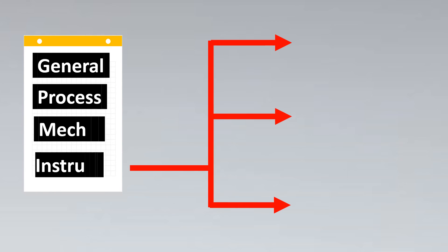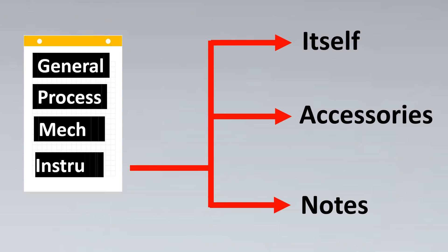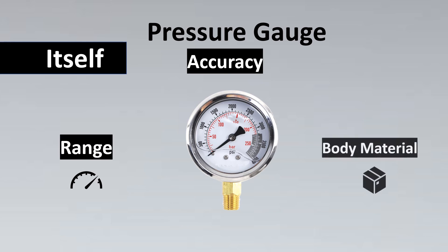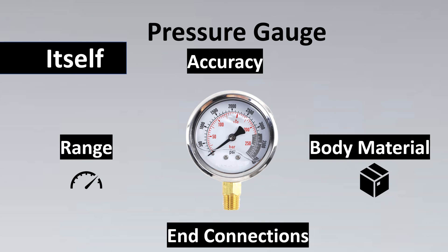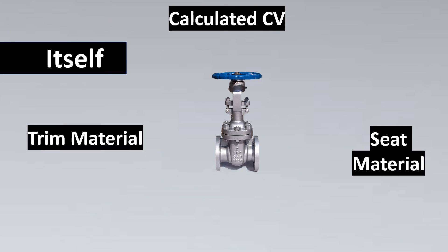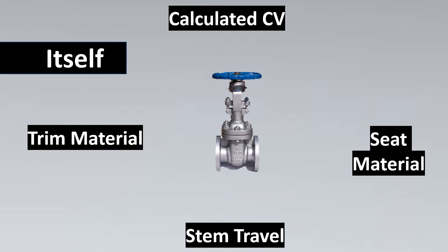The instrumentation part can be broken into three sub-parts: the instrument itself, its accessories, and the notes section. The instrument itself includes its own components — for example, for a pressure gauge: accuracy, range, body material, and end connections such as threaded or flanged. For a control valve, it could include the calculated Cv, trim material, seat material, stem travel, etc. This varies from instrument to instrument and is captured in the form type.